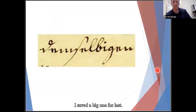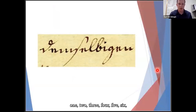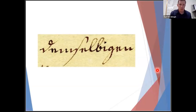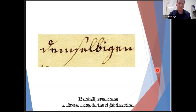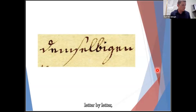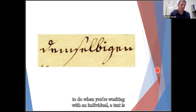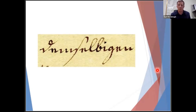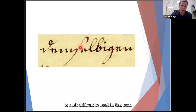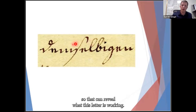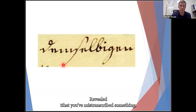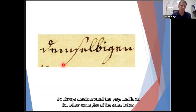I saved a big one for last — this word is eleven letters. Even getting some of the letters is a step in the right direction; remember, we're deciphering letter by letter, not trying to read words. A useful technique when working with an individual text is to verify uncertain letters — if you see the same letter later in the document in a word you already know, that can confirm or correct your reading. Sometimes it helps to cover up parts of the word so you can focus on one letter at a time. The word is 'Demselbegin' — a very big word.